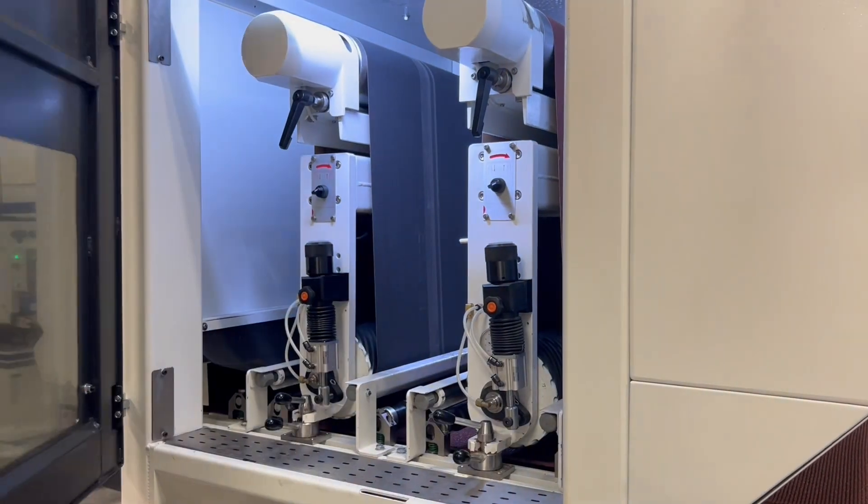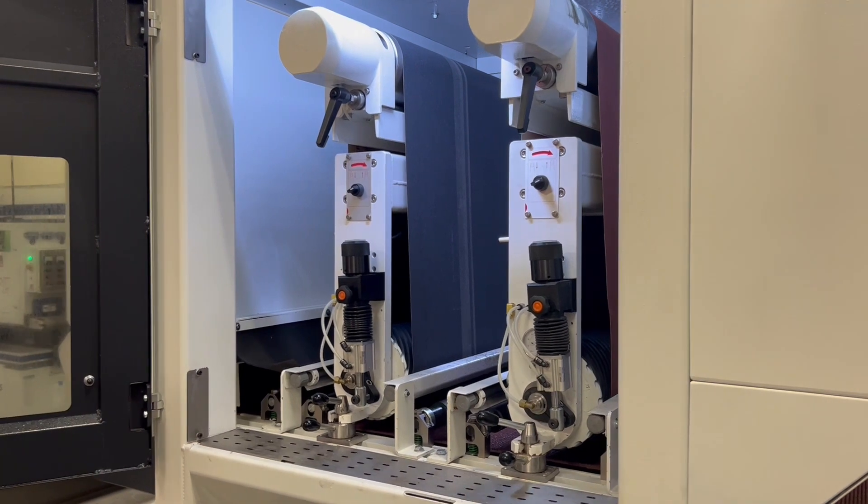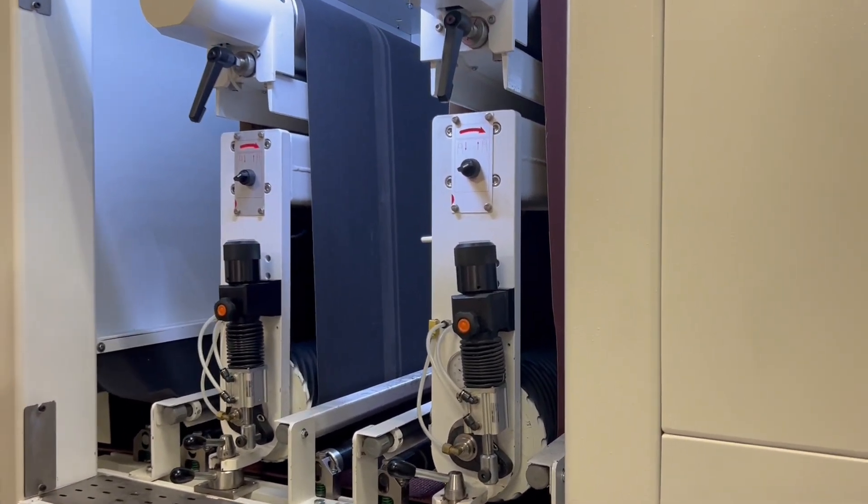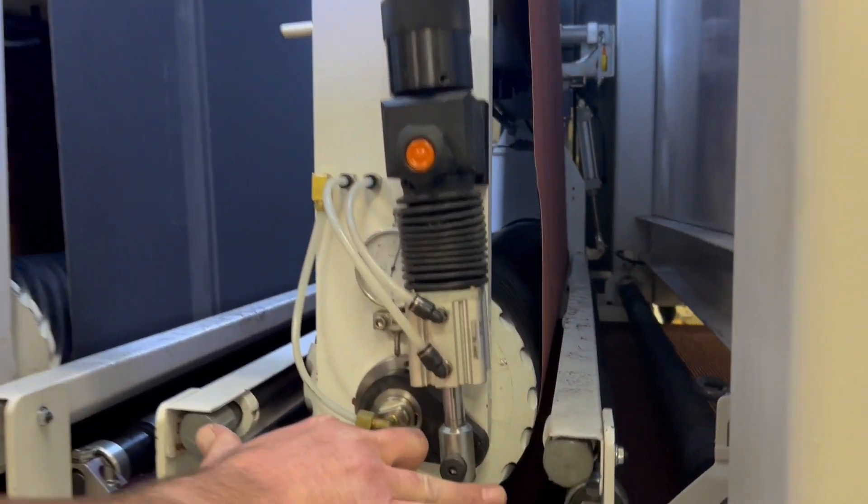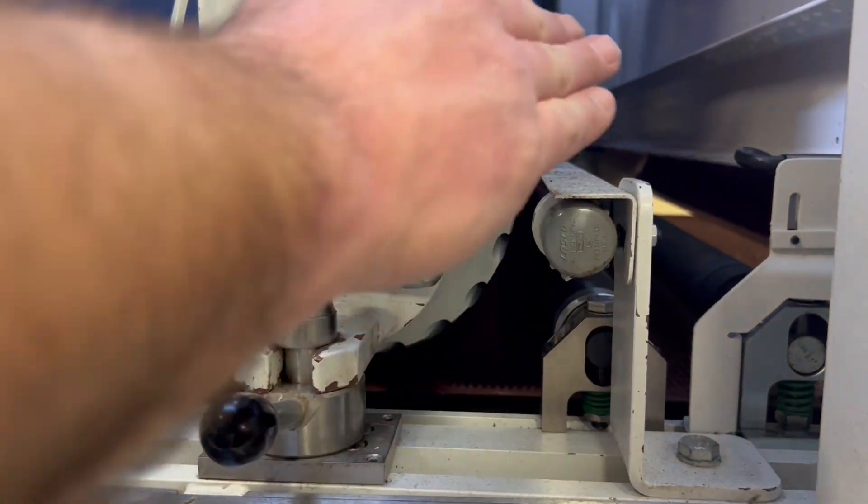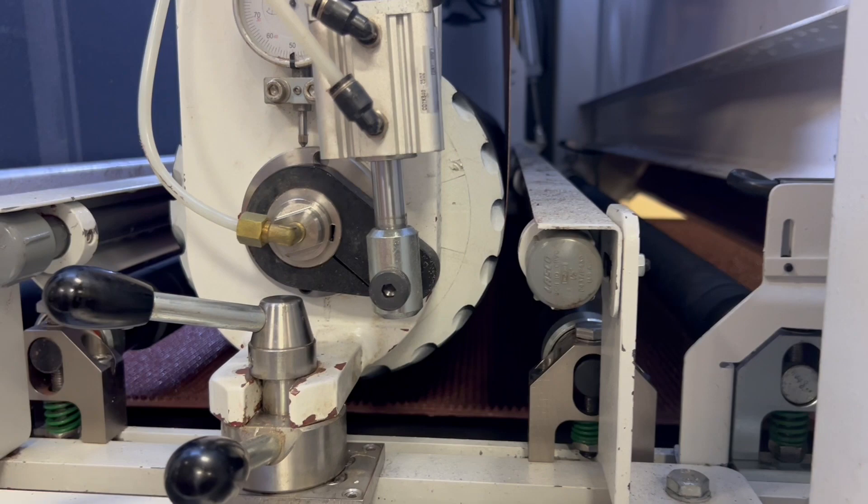This is a wet processing machine. There are some advantages here with a wet processing machine. We can definitely mix metals. You can see here we do have spray headers for both heads. They are pointed right at the point of contact.